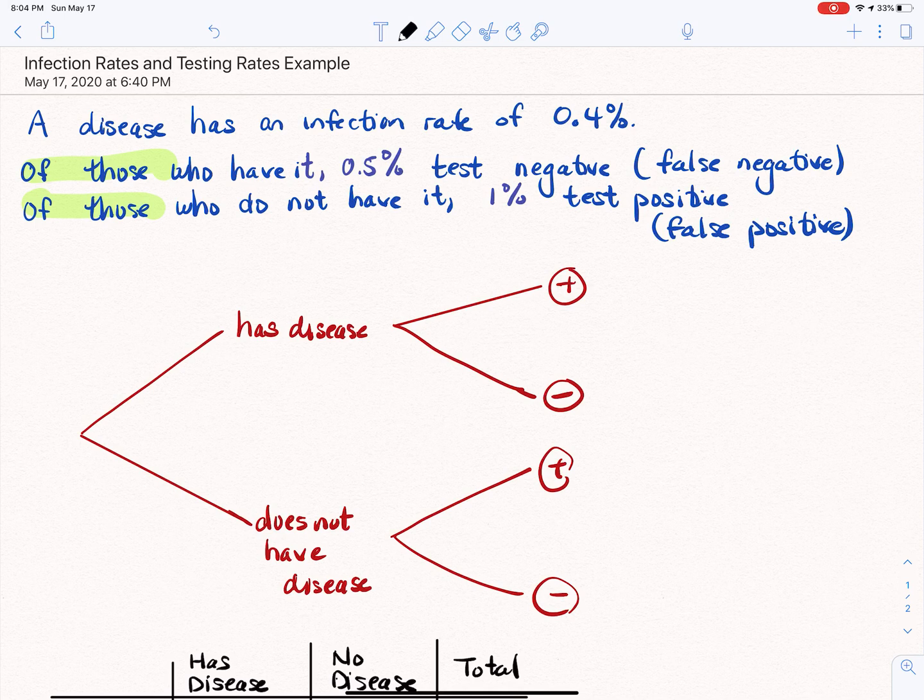Then we know that of those who have it, a half a percent test negative, so that's what we call a false negative. And of those who do not have it, 1% test positive, which we call a false positive.